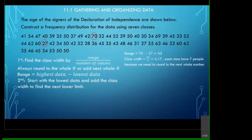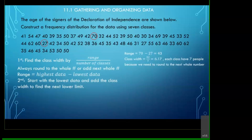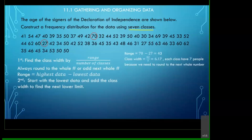A student asks: where did the seven come from? The answer is that the problem told us to use seven classes — it says right here to use the data with seven classes. Most of the time the problem will specify how many classes they want, such as eight classes, five classes, and so on. That's where the number of classes comes in.